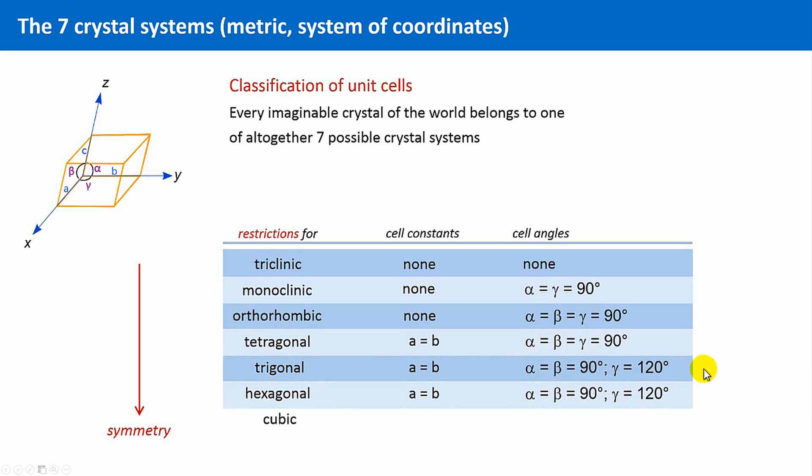The next three crystal systems are characterized by the fact that two of the three lattice constants have to be equal, and that all three angles are fixed to these values here.